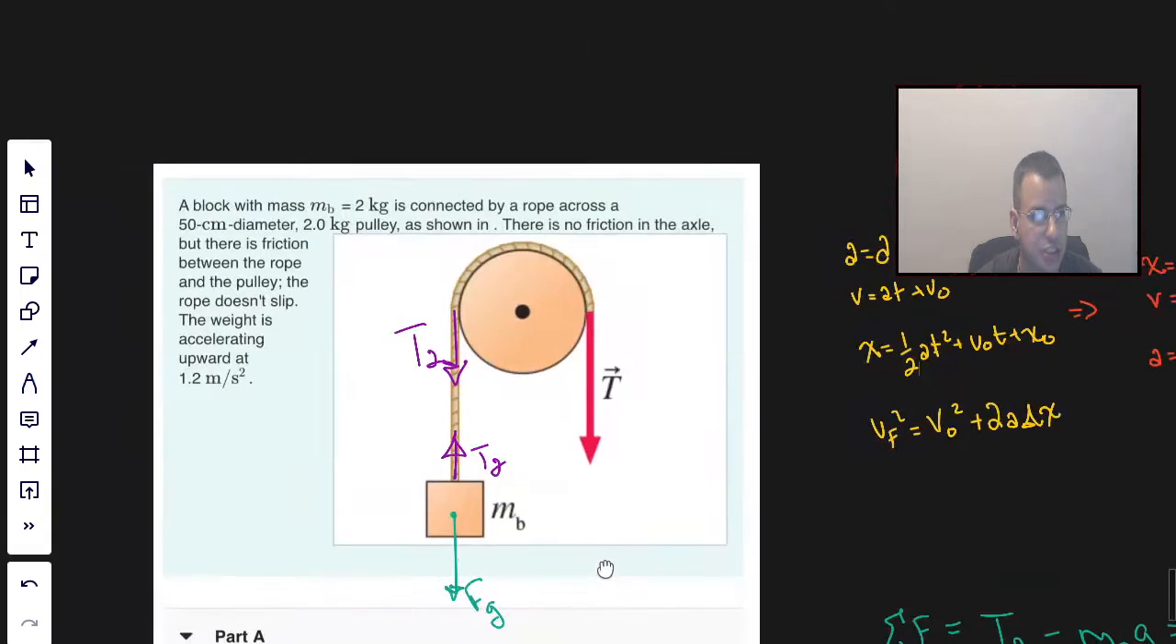Which we know is going to be mass of the block times acceleration. So the sum of all forces equals mass times acceleration. So tension 2, solving this, is going to be mass of the block times gravity plus mass of the block times acceleration, which is going to be the same as mass of the block times gravity plus acceleration.